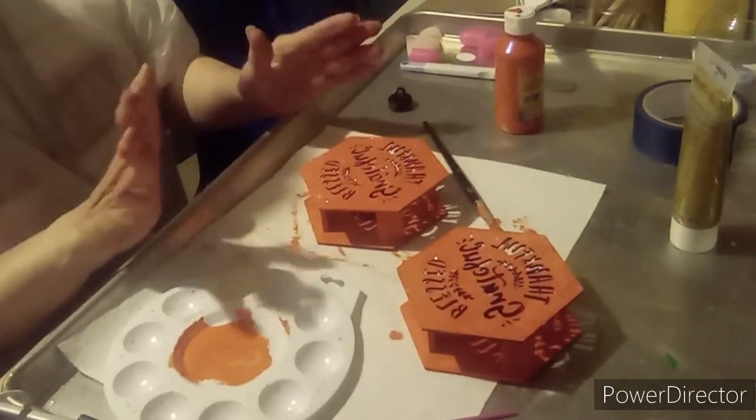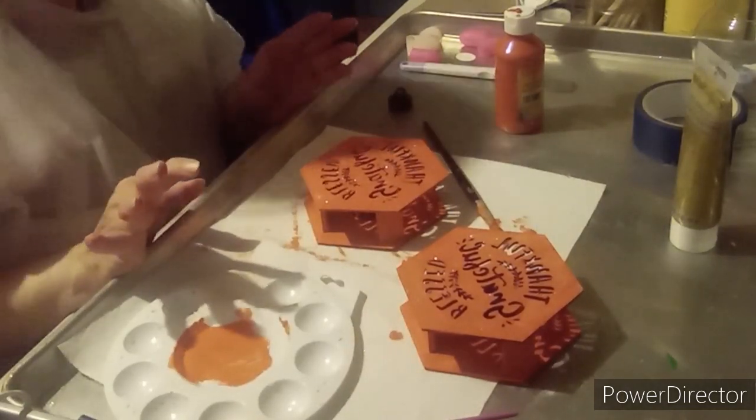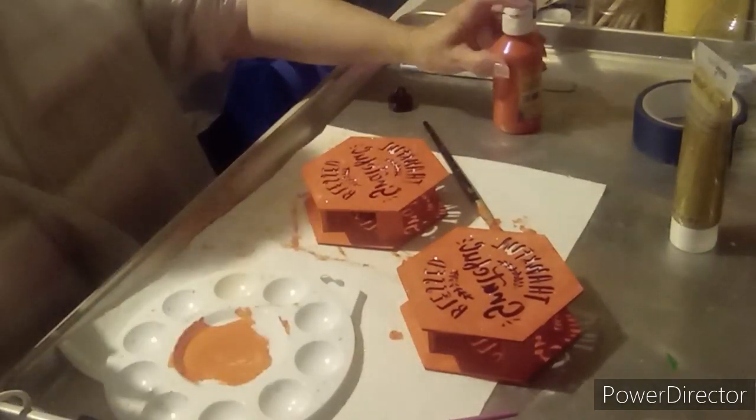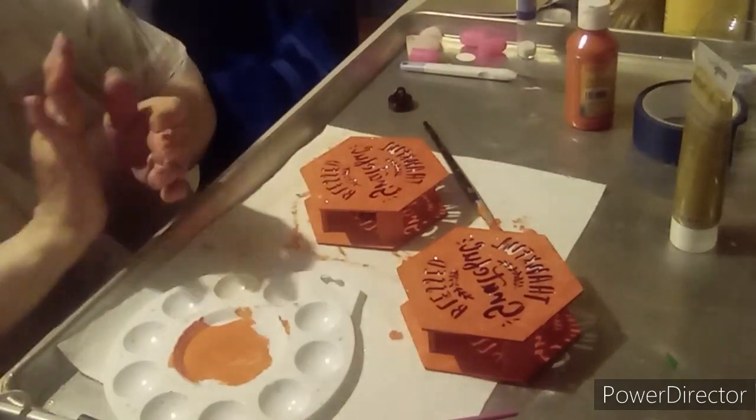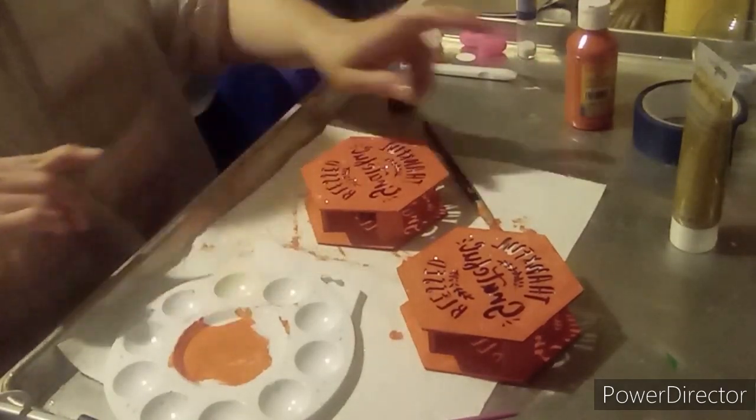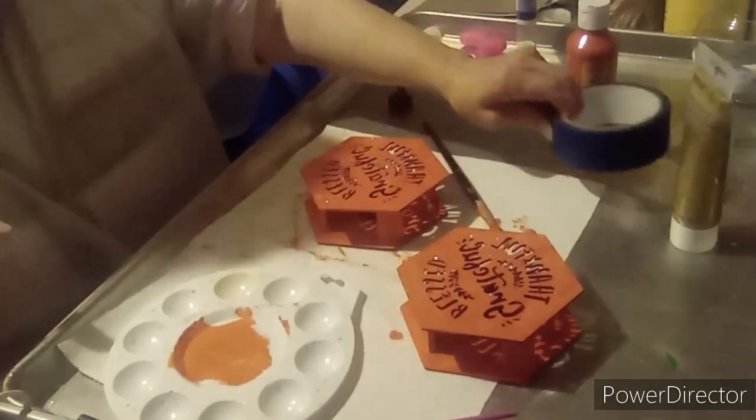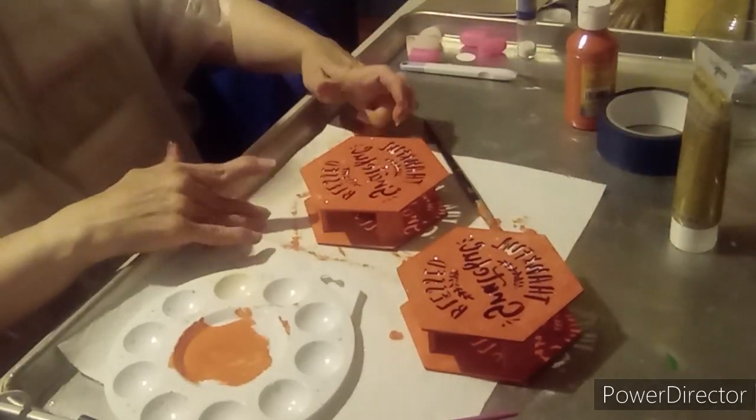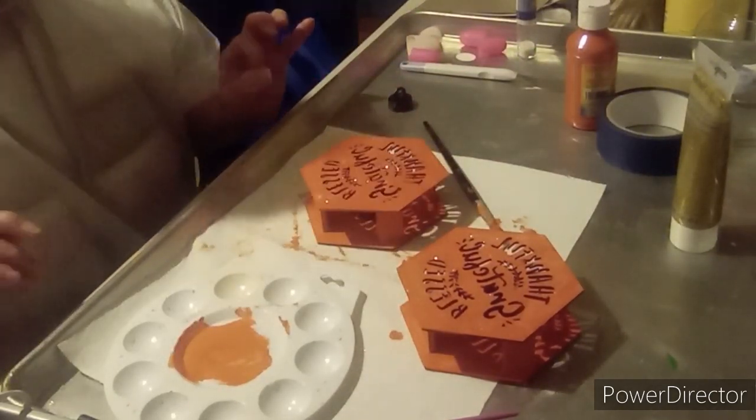Now, after this dries, I'm going to get glitter on. So after this dries, I'm going to be taking off the painter's tape from around the lights. The little tea lights.